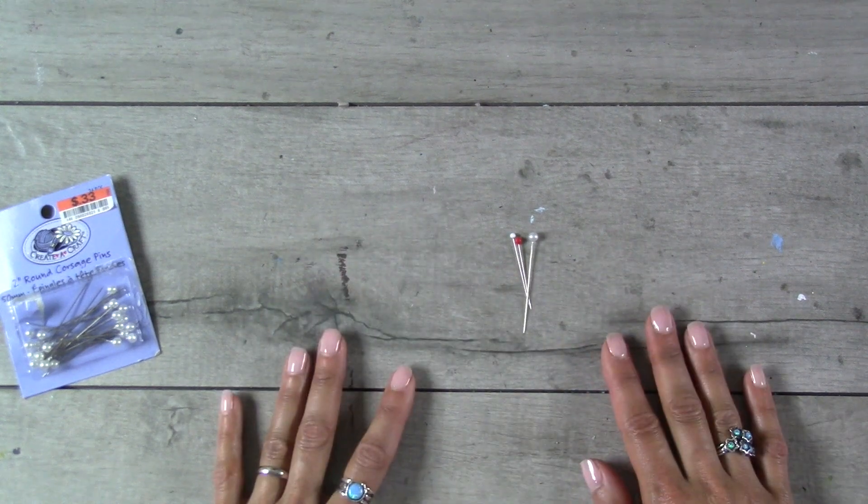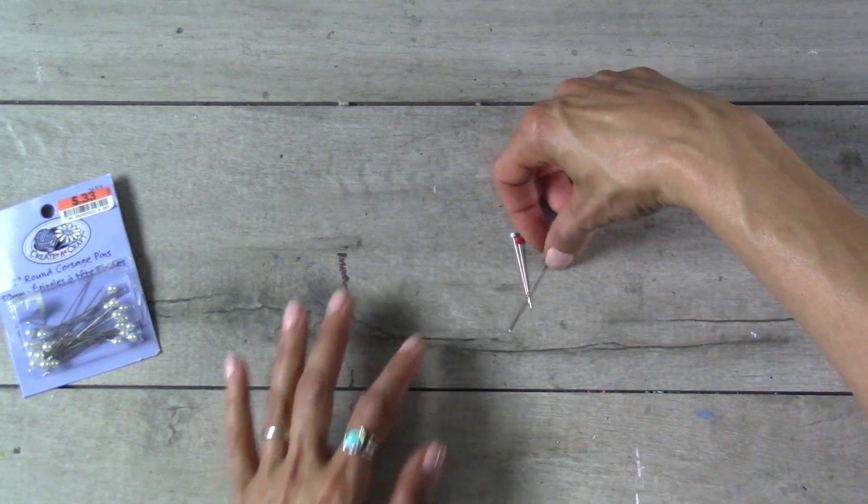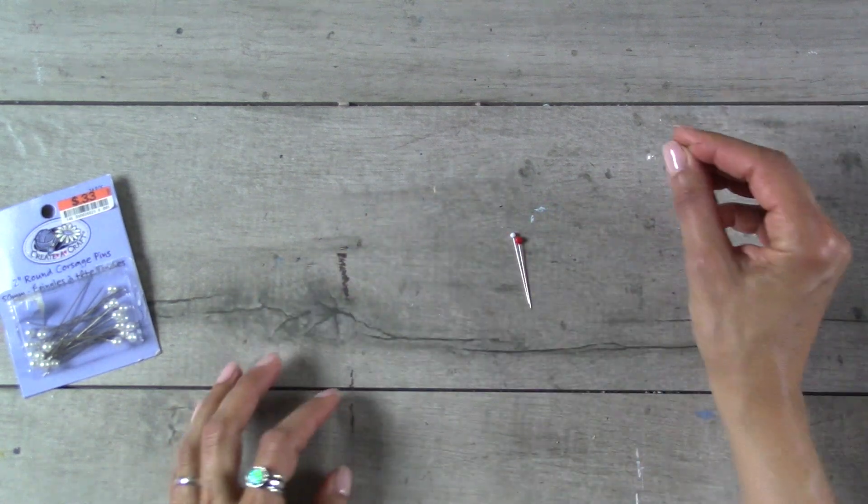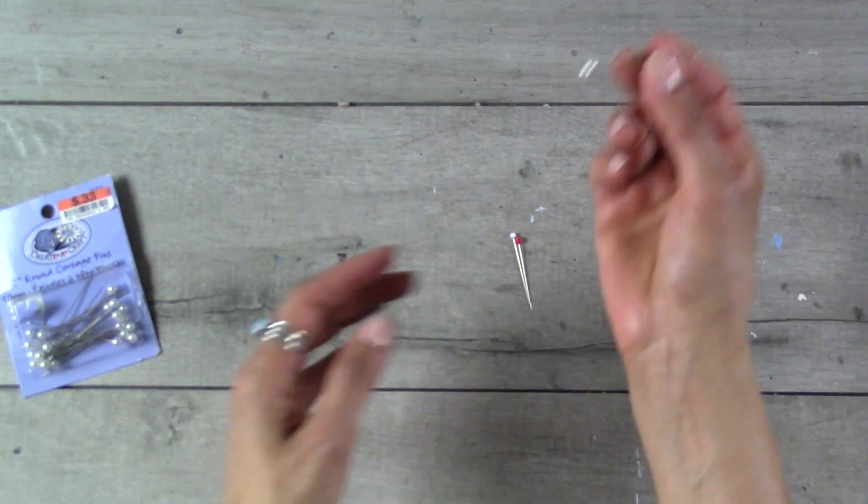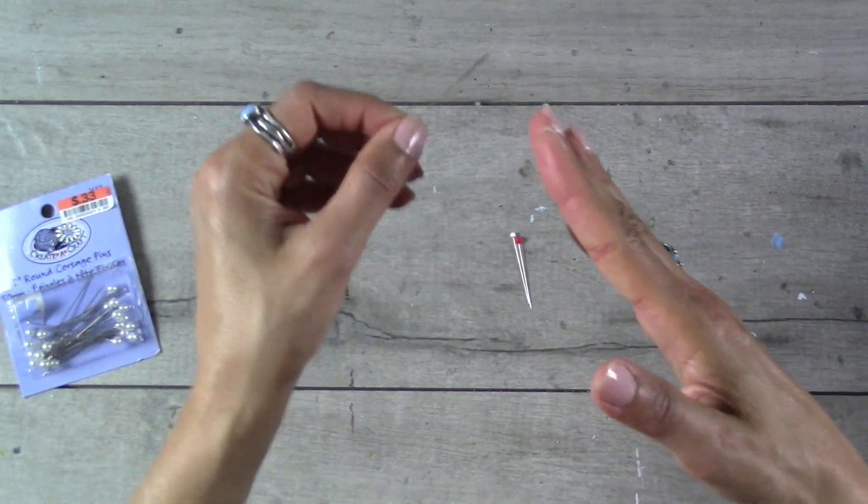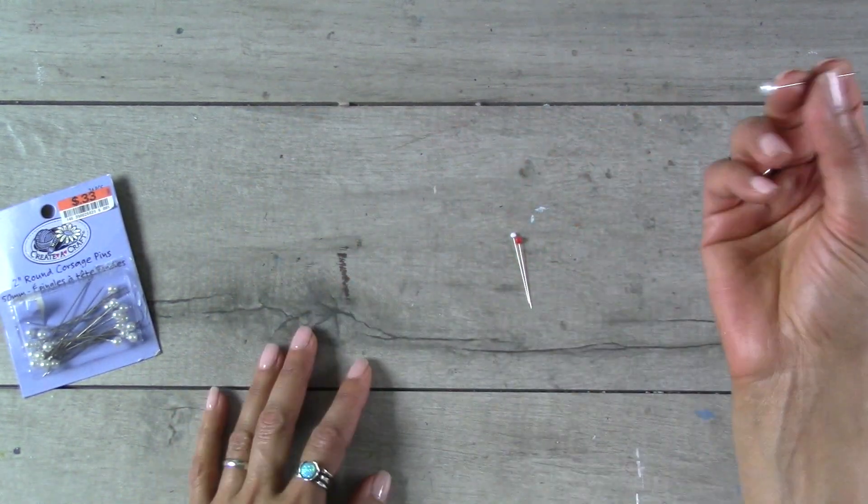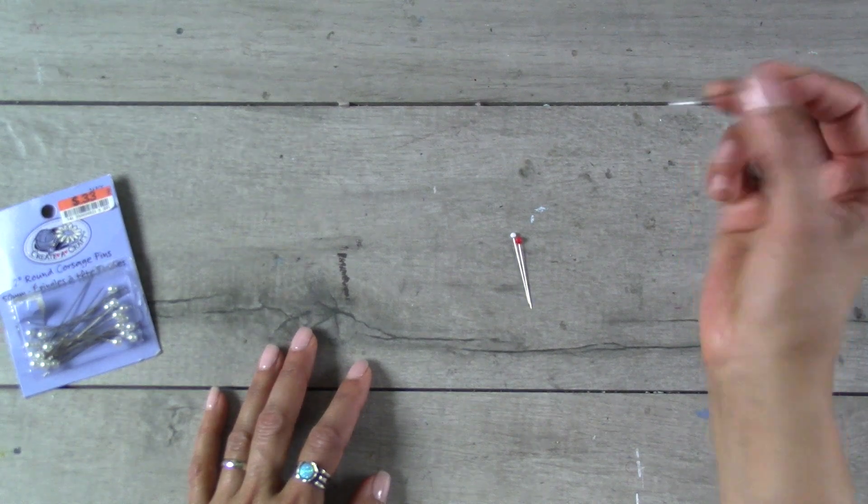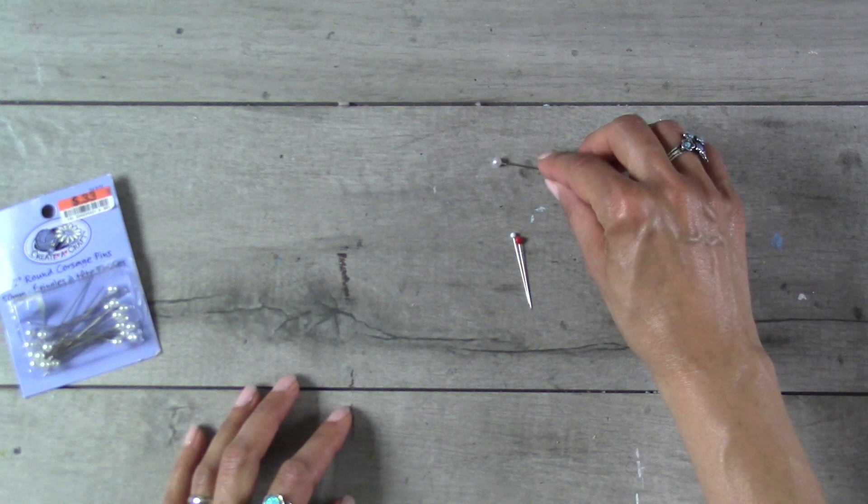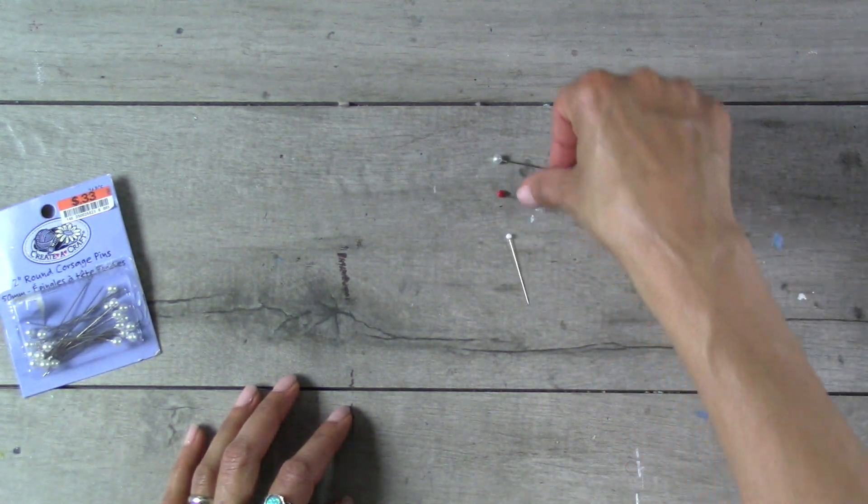You could choose to use these pins just as they are - just hold them by the base and use them to stamp. You just want to be careful because obviously the ends are sharp and you can poke yourself if you're not careful. You can always just trim off the sharp ends and use them like that.